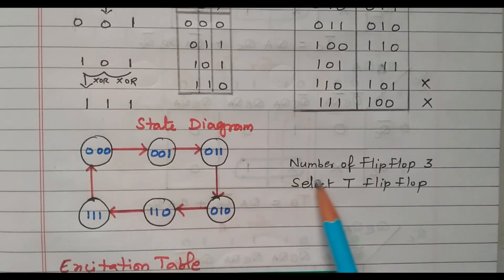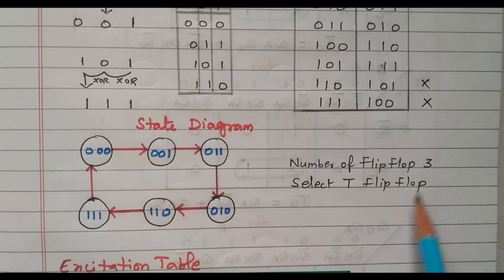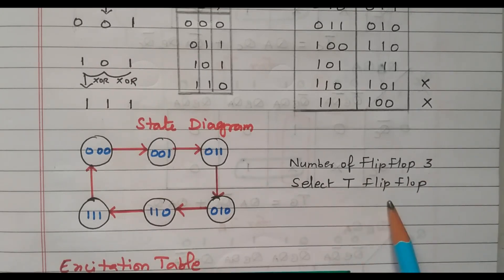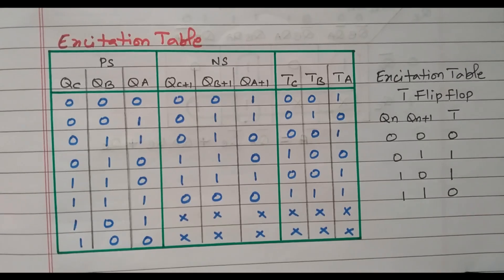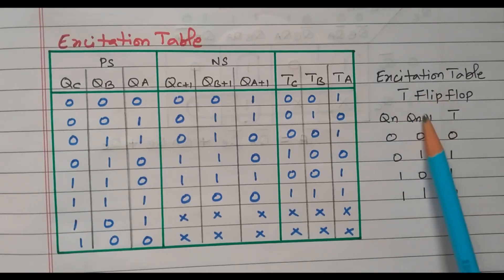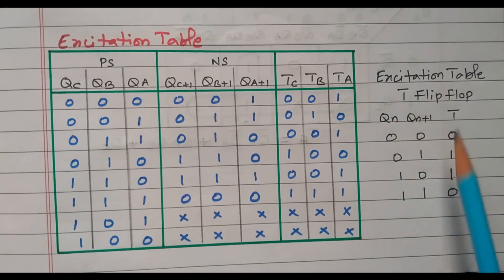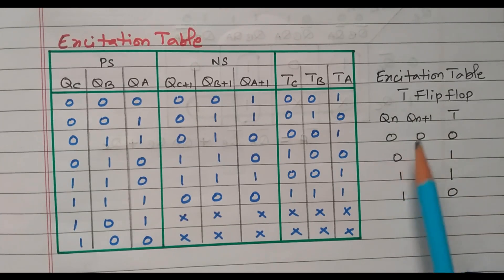From the state diagram we can see three flip-flops are required. We will select the T flip-flop. Now we need to identify the excitation table for the counter, so first we will look at the excitation table of the T flip-flop.